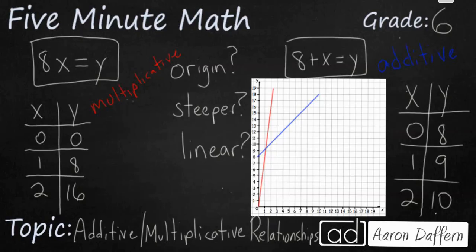So 8x equals y is our multiplicative relationship. It is graphed in red here. And 8 plus x equals y. That's our additive relationship. They are both linear. They're both straight lines. But our multiplicative equation, the red line, has a much steeper slope. And it is the only one that goes through the origin, through our 0, 0.